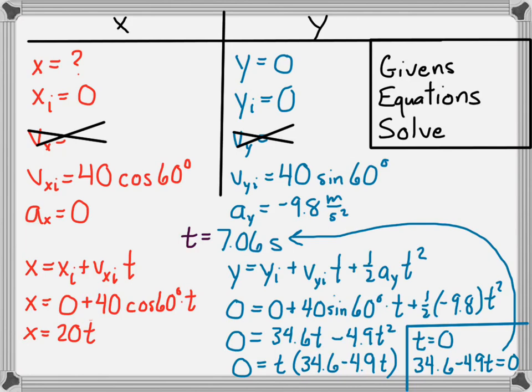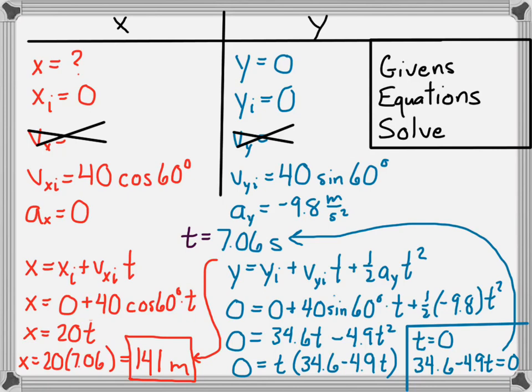Now that we know time, we plug t back into the x equation: x equals 20 times 7.06, which gives 141 meters. The total range of this projectile from its launch point to where it hits the target is a horizontal distance of 141 meters. That's how you deal with projectile motion when launching at any angle — you can use this same process to find time of flight, range, and other quantities.